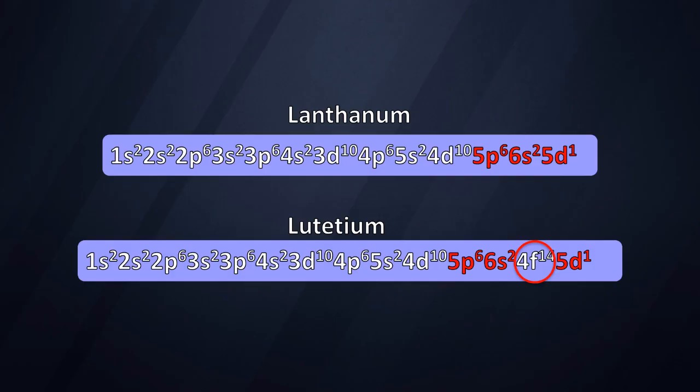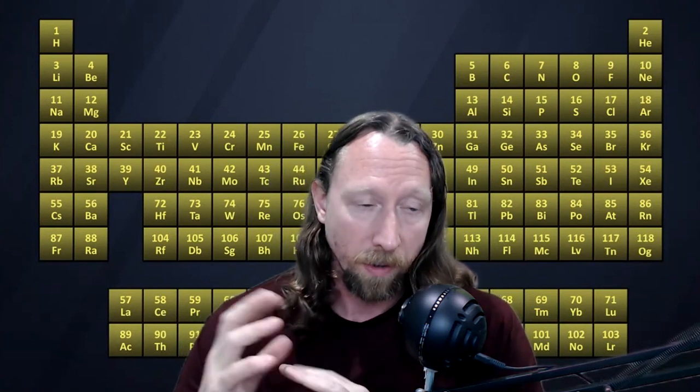It is very difficult to make an absolute argument that group 3 should contain lanthanum and actinium or lutetium and lawrencium — to the point where many periodic tables simply give up and place both groups of elements down with the f block, leaving an empty space for the reader to make the decision for themselves.